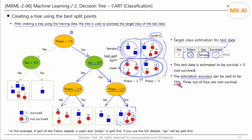In this example, only a part of the Titanic dataset was used, so PCLASS was used as the first split condition. However, if you use the full Titanic dataset, SEX will be the first split condition.